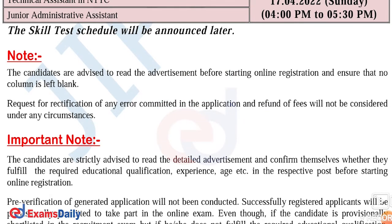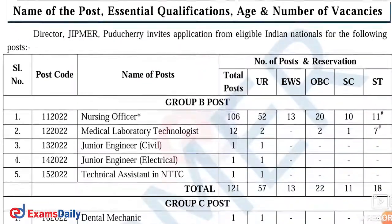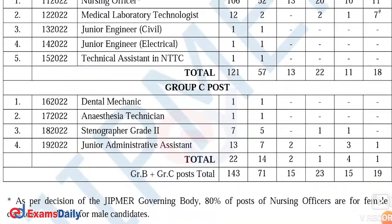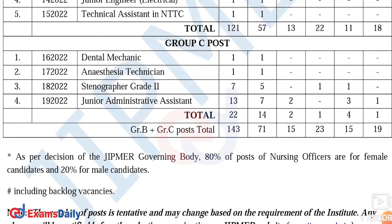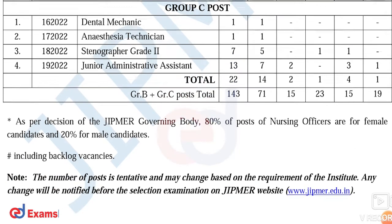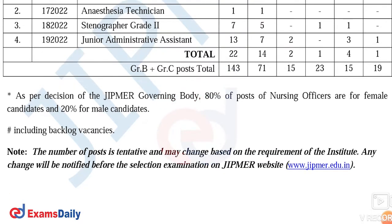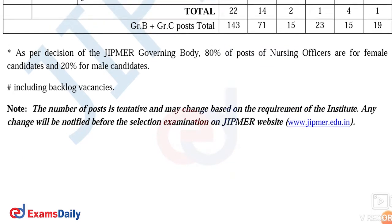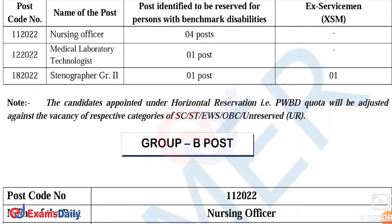Students will be able to do skill tests and share the details. The first is Group B — the first is 18 and the third is 13. The posts include dental, mechanical, anesthesia, and technician. If you have any questions about how to apply, you will need to share the details.